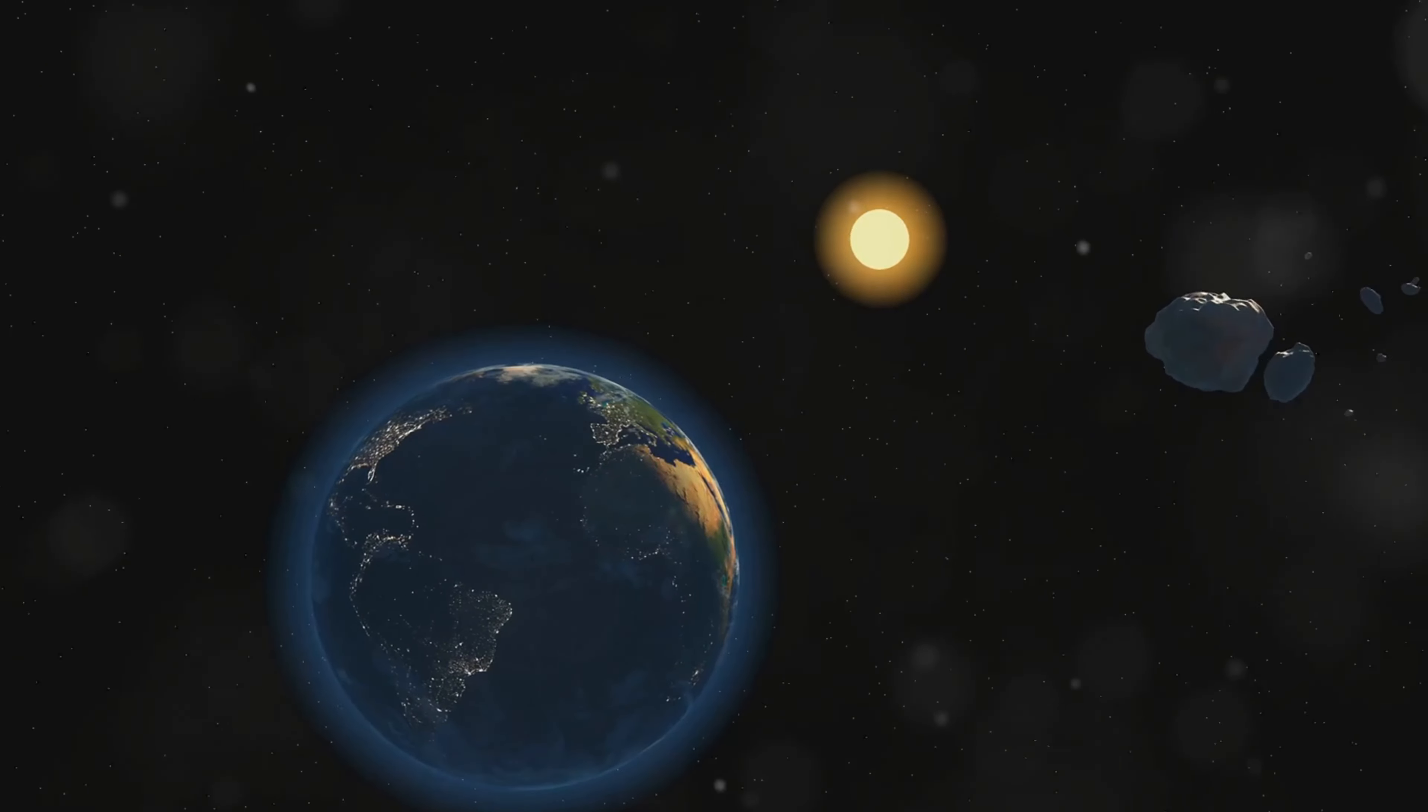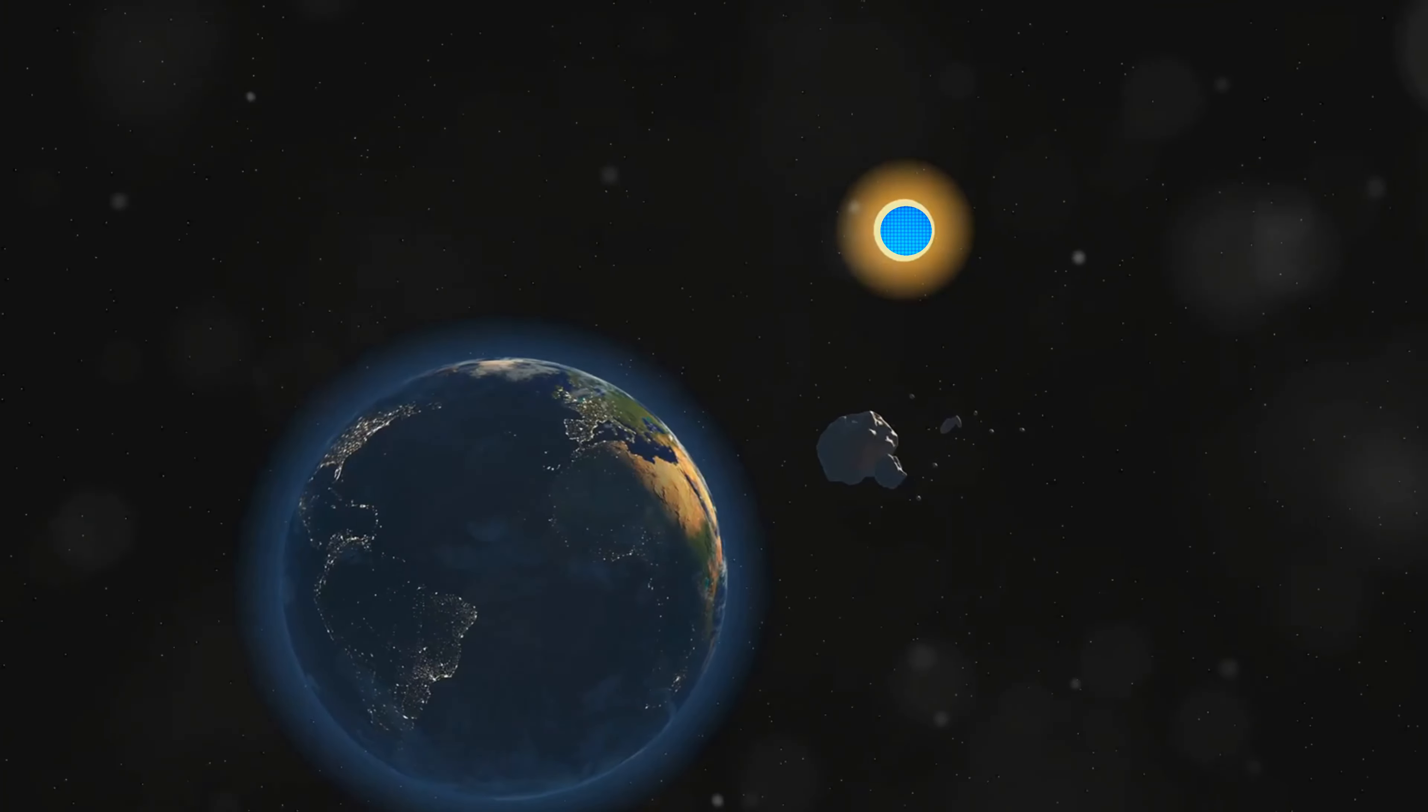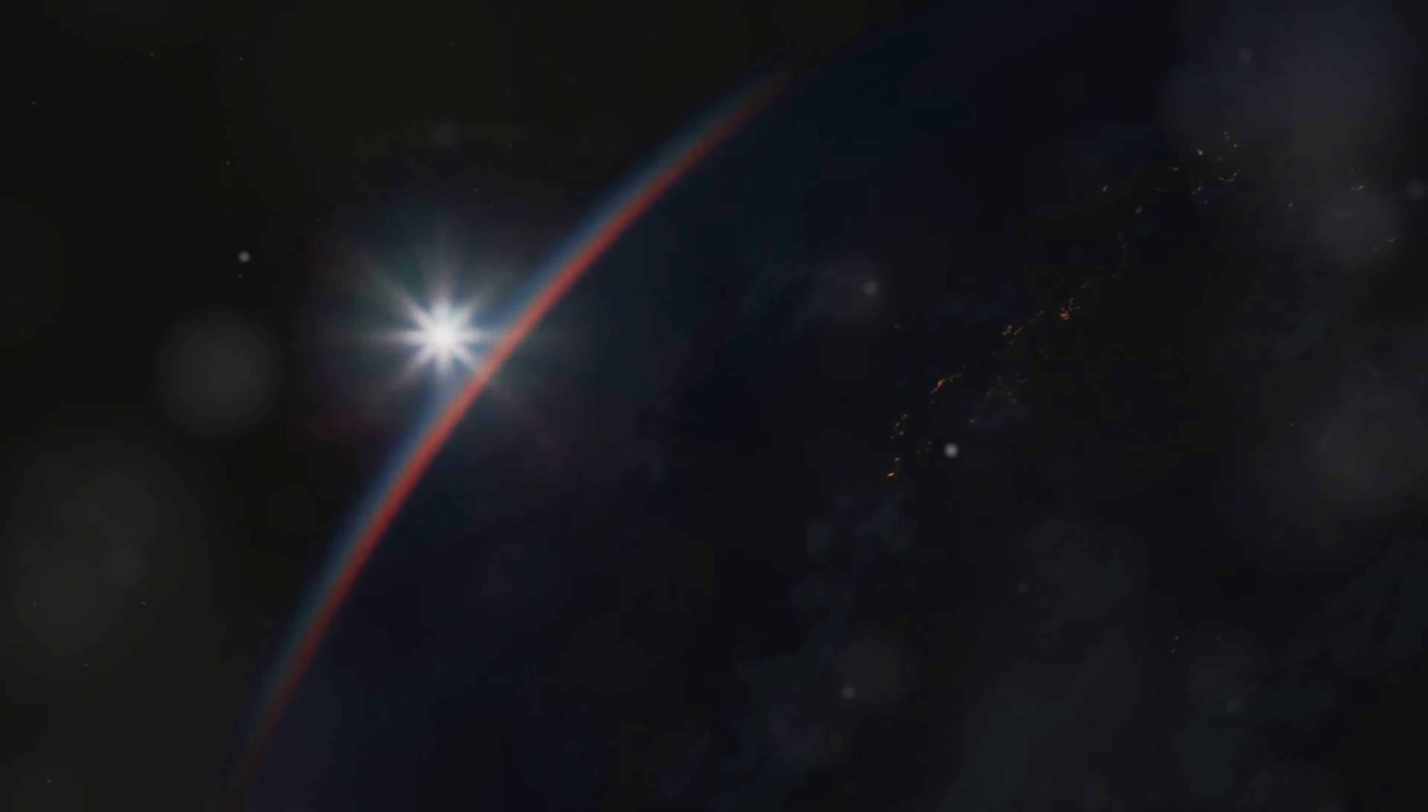In fact, if we replaced the sun with a black hole of the same mass, Earth would continue orbiting as if nothing had changed. The only difference would be the lack of sunlight.